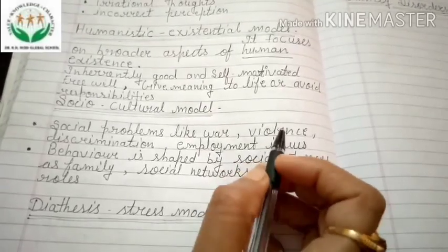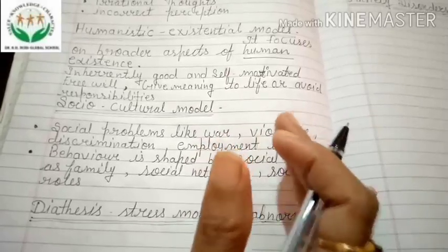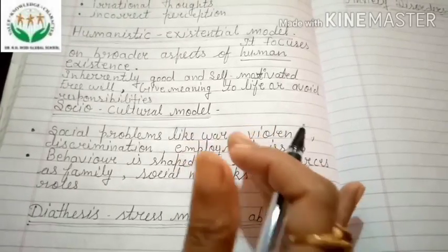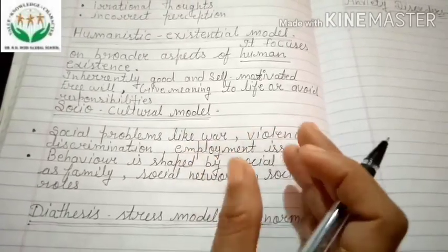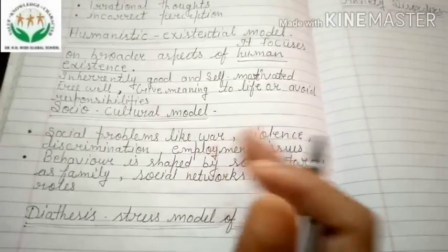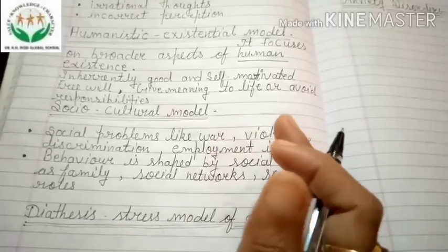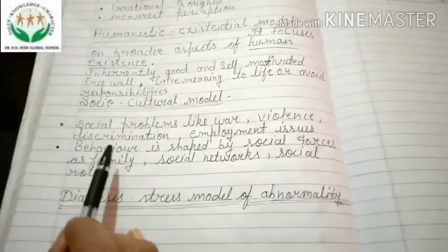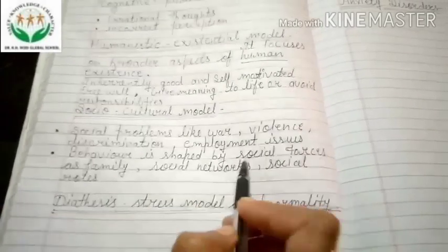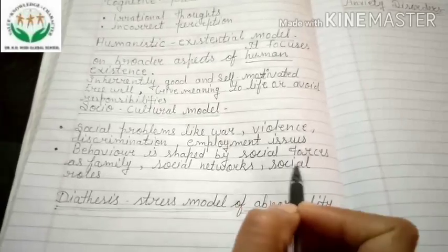There are many social problems such as employment issues and discrimination. If a person is unemployed, they become stressed and tend to isolate themselves. In many societies, caste and gender discrimination also increase psychological disorders. Behavior is shaped by social forces such as families, social networks, and social roles.